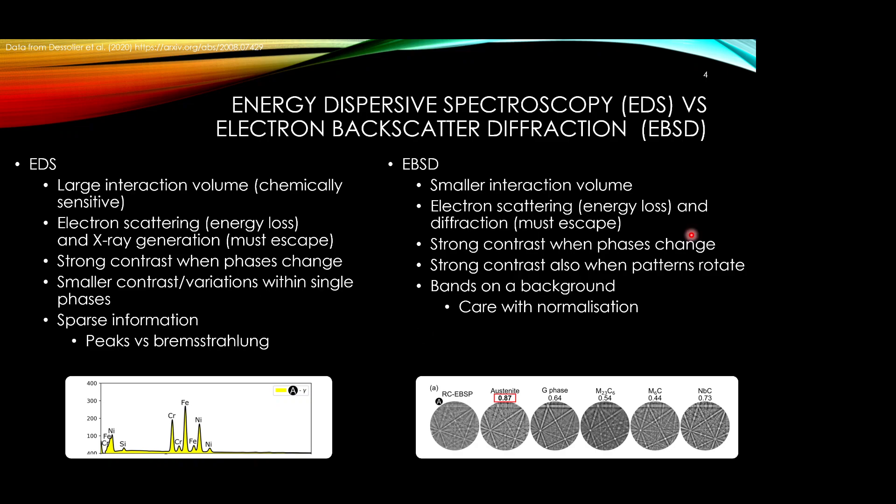For electron backscatter diffraction we have a relatively smaller interaction volume formed due to small amounts of near elastic electron scattering, and those electrons can effectively bounce off the lattice, diffract and produce our diffraction patterns. There is strong contrast when the phase changes because the crystal structure can give rise to a very different diffraction pattern, and there is also relatively strong contrast if there is rotation within the same phase. The patterns we often see are background corrected, and when doing data science approaches we have to be careful with that normalization. There's a lot of skill and art into that process itself.